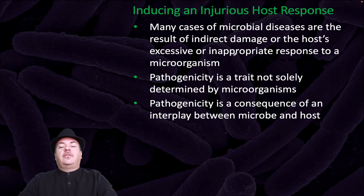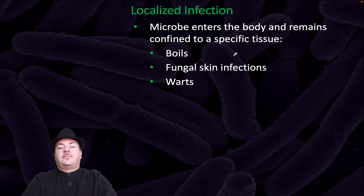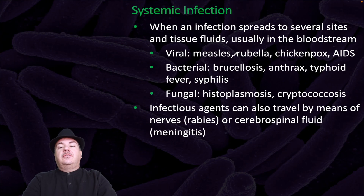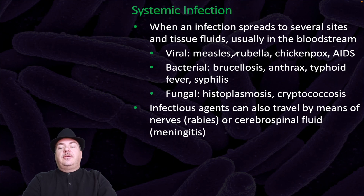Pathogenicity is a trait not solely determined by microorganisms — it is a consequence of an interplay between microbe and host. Localized infections occur when a microbe enters the body and remains confined to a specific tissue; examples include boils, fungal skin infections, and warts. Systemic infection is when an infection spreads to several sites and tissue fluids, usually via the bloodstream — viral examples include rubella, chicken pox, and AIDS; bacterial examples include anthrax, typhoid fever, and syphilis; fungal examples include Cryptococcus. Infectious agents can also travel by means of nerves — for example, rabies — or cerebrospinal fluid, for example meningitis.